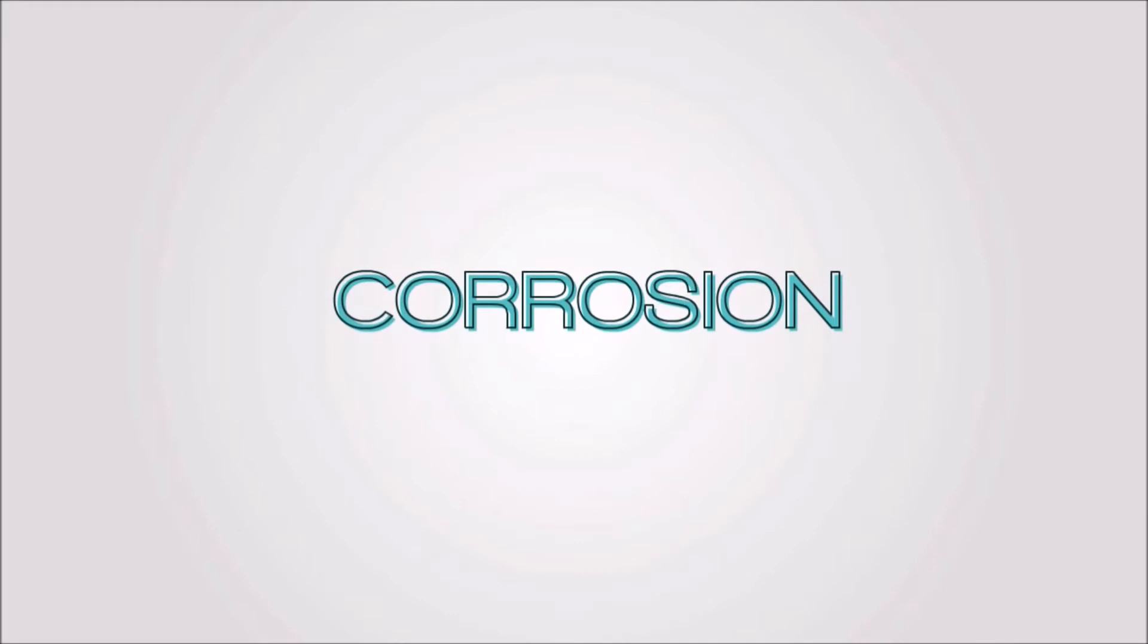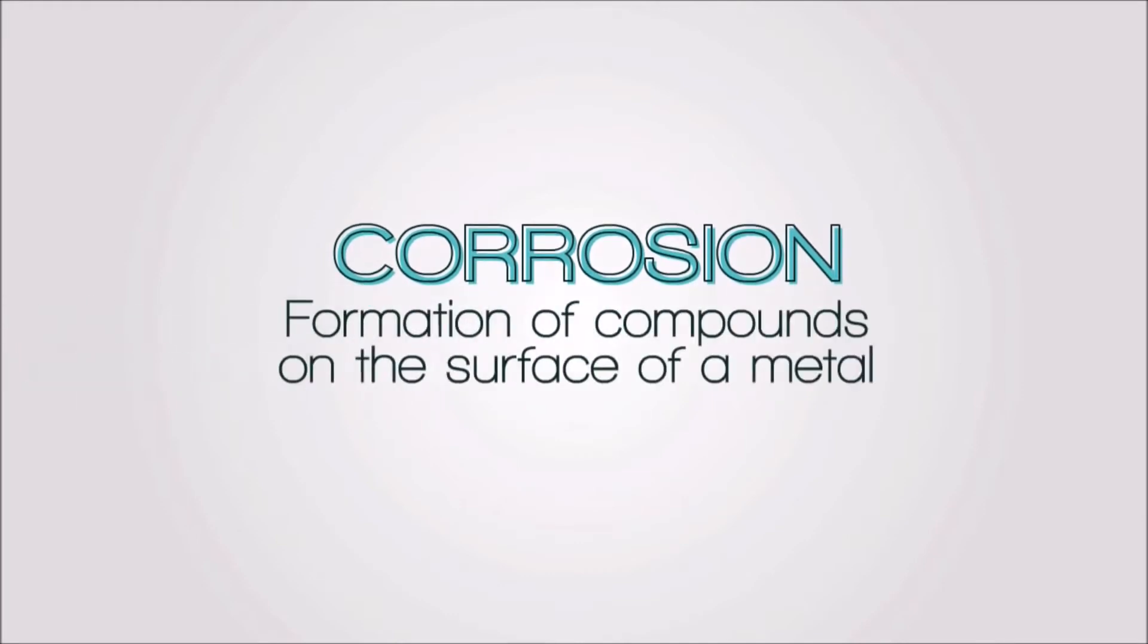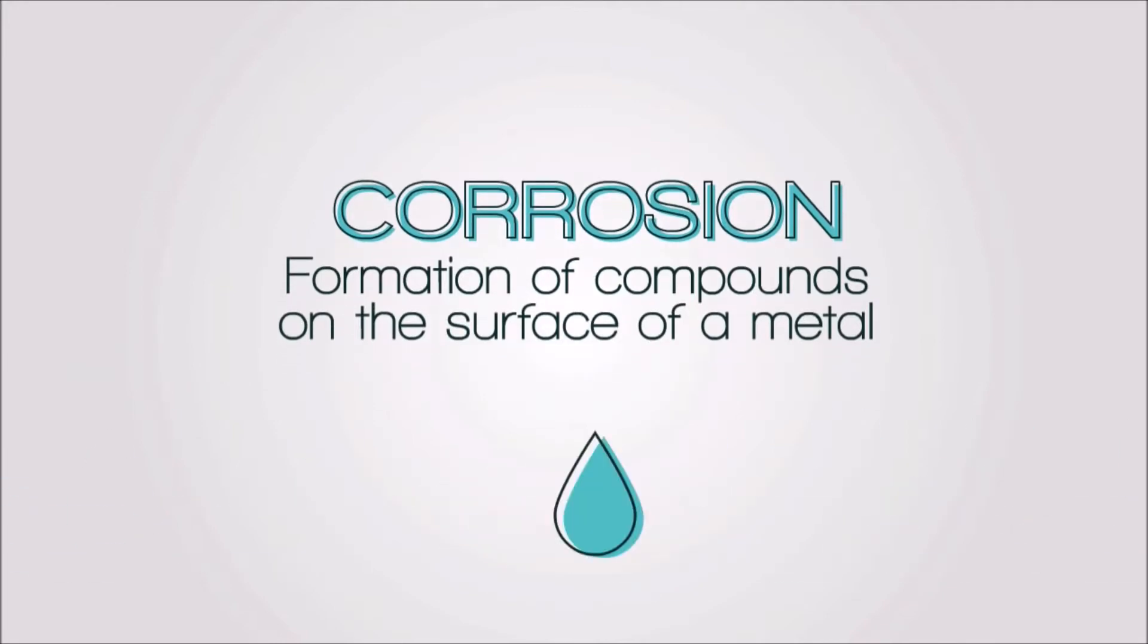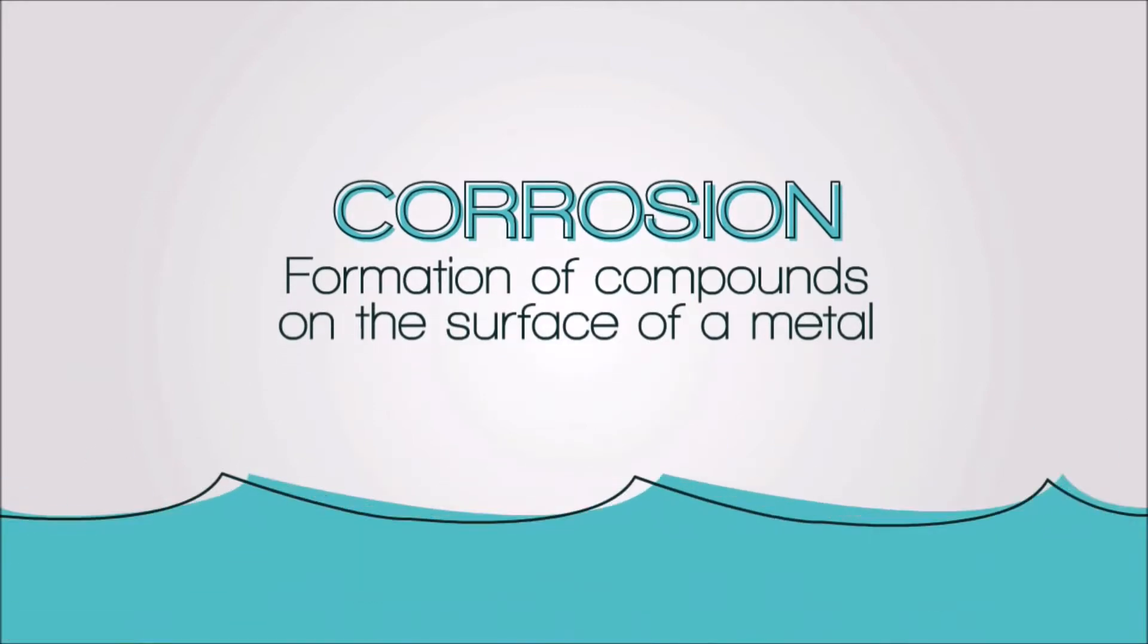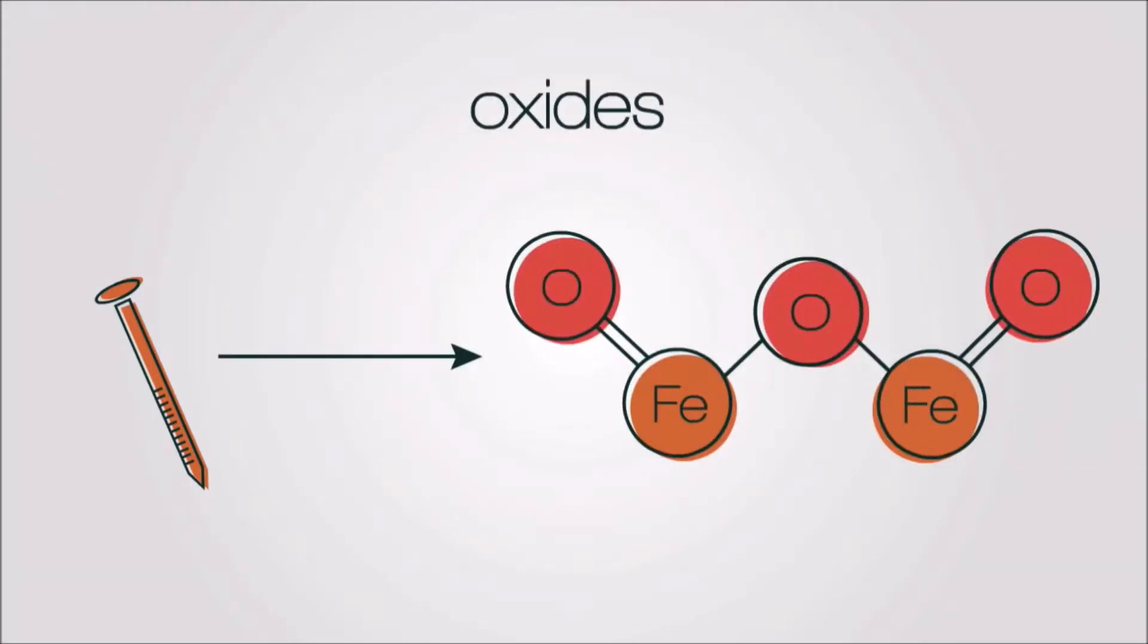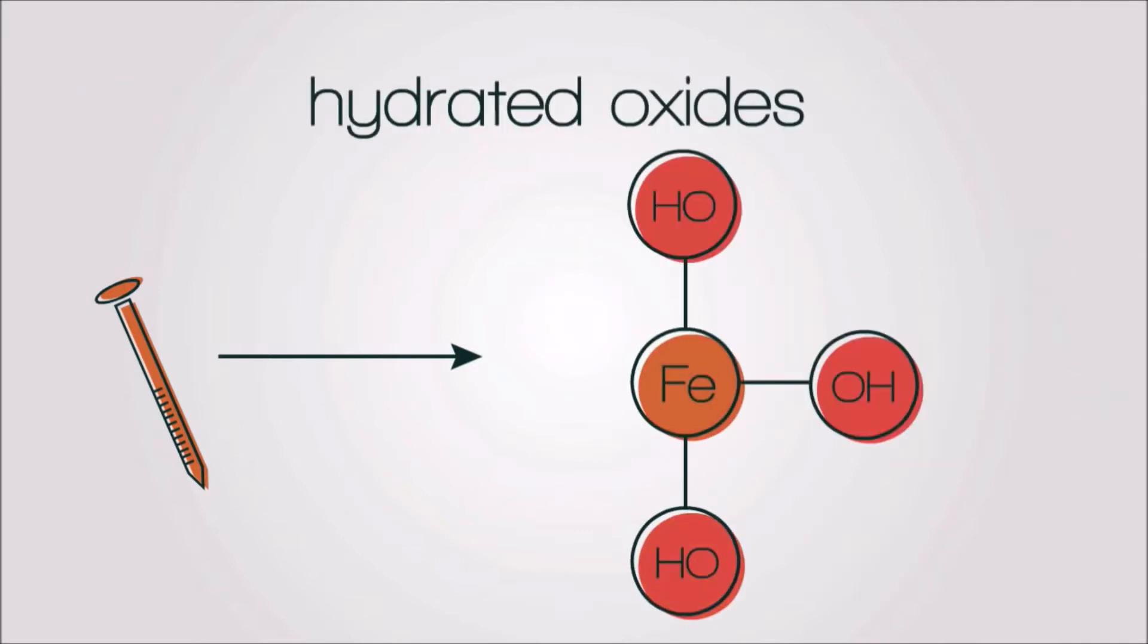Corrosion is described as formation of compounds on the surface of a metal when it is exposed to air and or water or an electrolyte like salt water. Typically, once a metal corrodes, it forms compounds known as oxides or hydrated oxides.